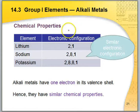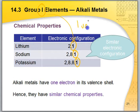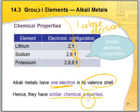The next part covers chemical properties. For lithium, sodium, and potassium, the electronic configurations are 2,1 — 2,8,1 — and 2,8,8,1. The pattern is the 1 at the end. So for Group 1 elements, they have 1 valence electron. Because they all have 1 electron in the valence shell, they have similar chemical properties. Chemical properties actually depend on the electrons in the valence shell.